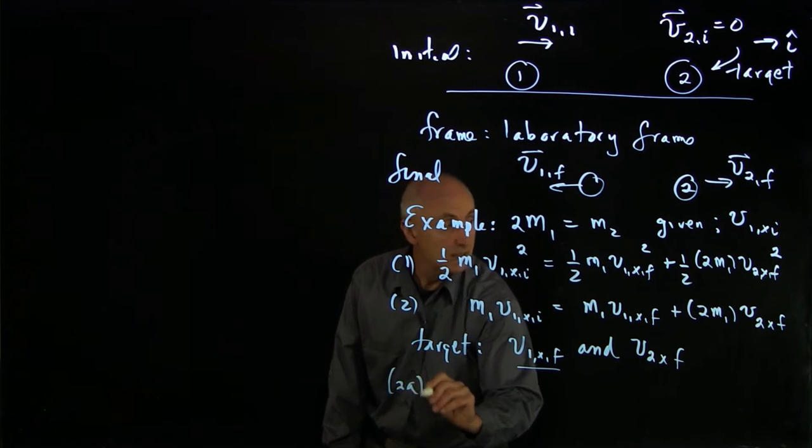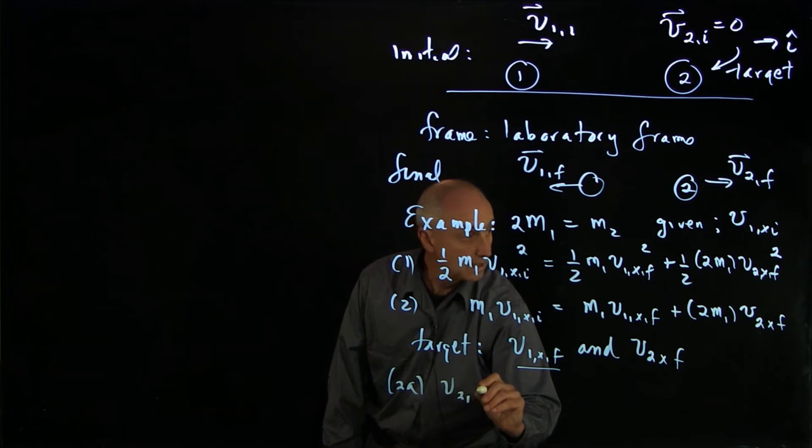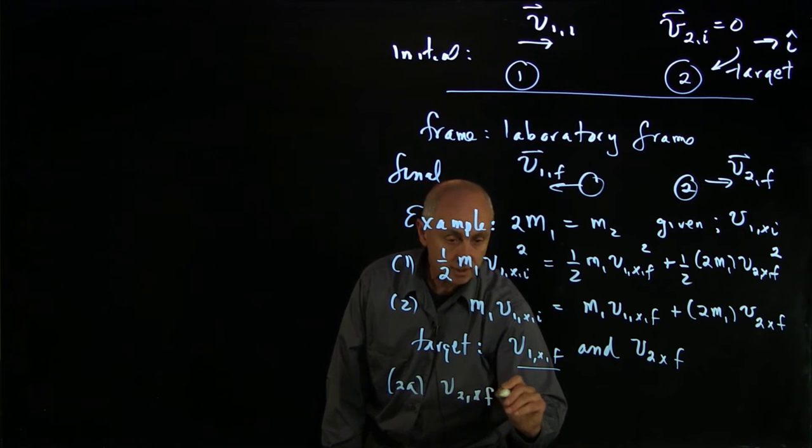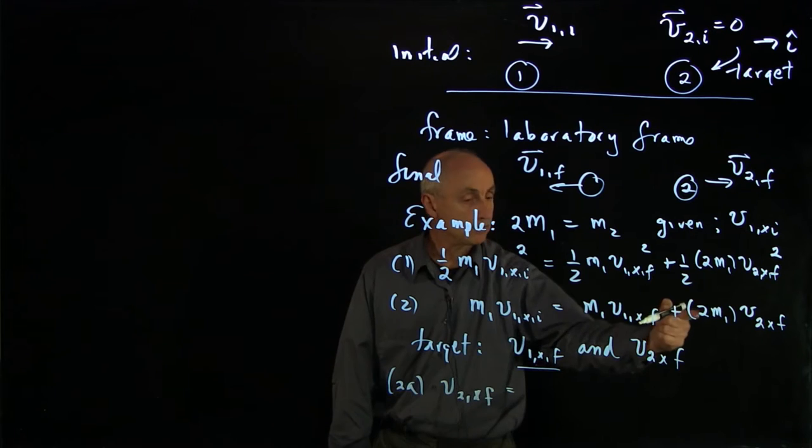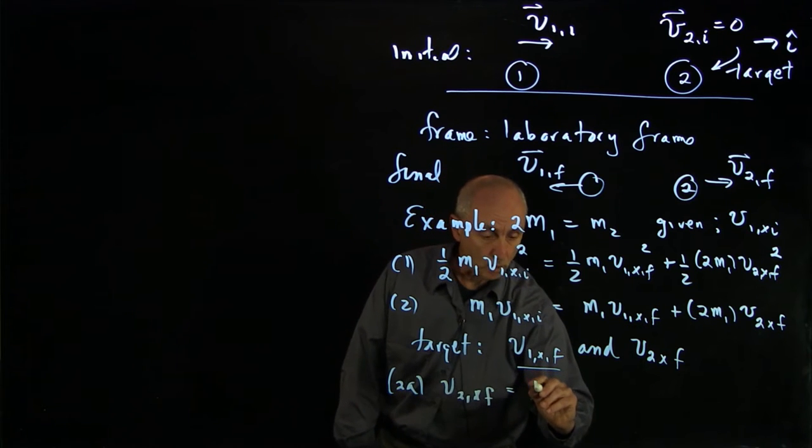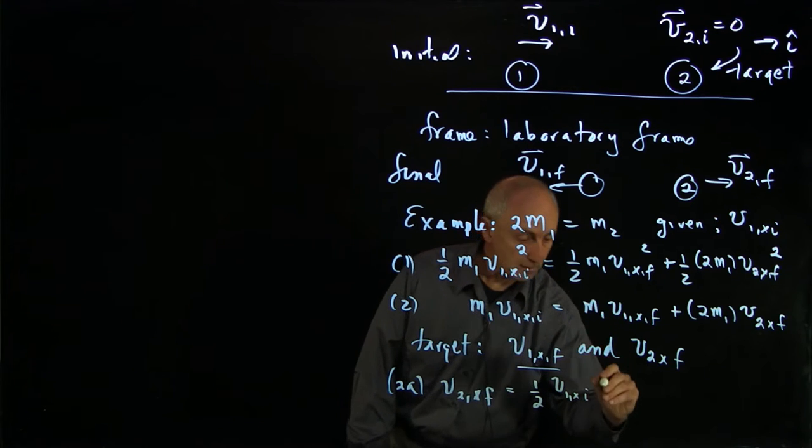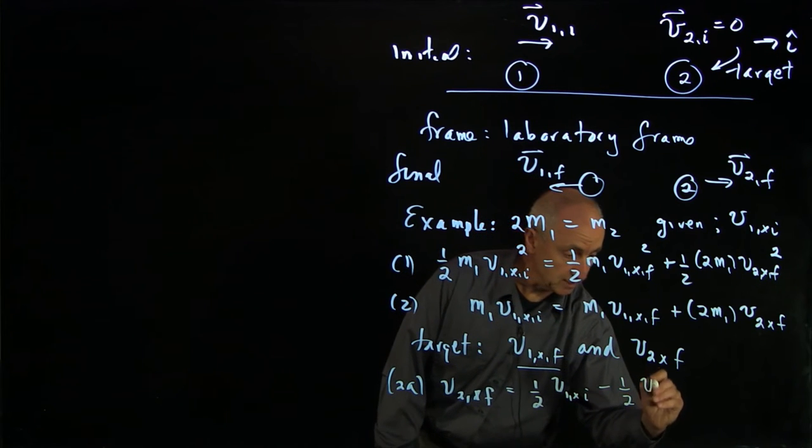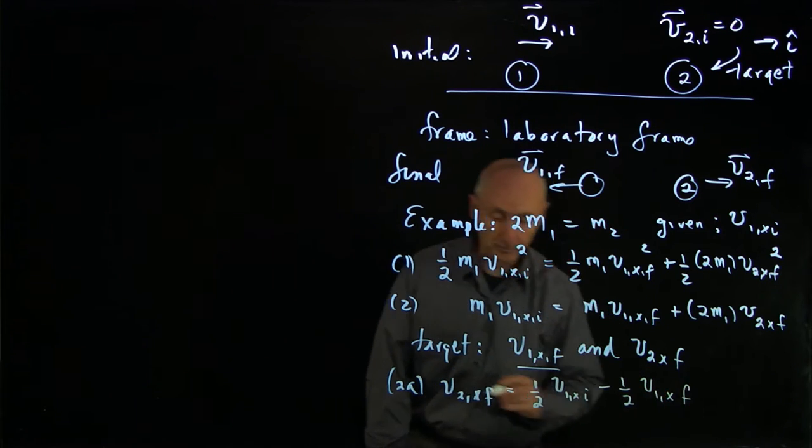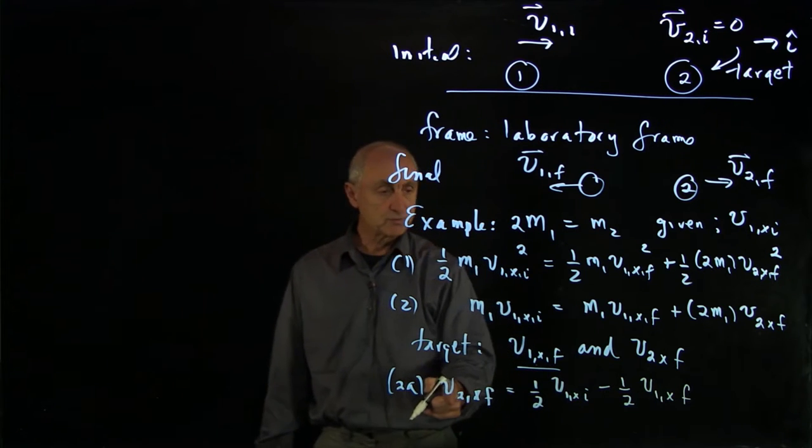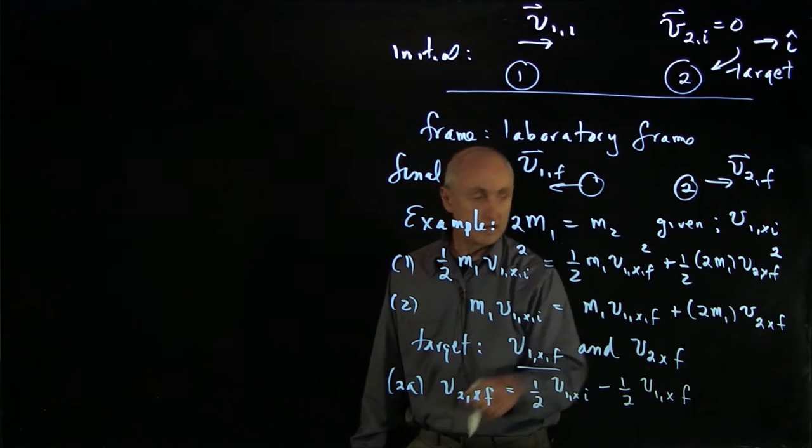equation 2a becomes v2x final equals, I'm dividing through by 2, 1/2 v1x initial minus 1/2 v1x final. So this gives me a target, v2x final. I can substitute into there.